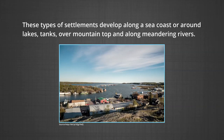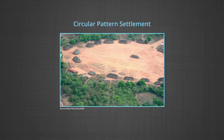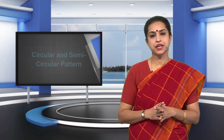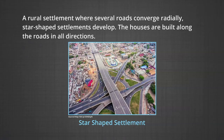Circular and semi-circular pattern: these types of settlements develop along the sea coast or around lakes, tanks, over mountain tops, and along meandering rivers. Sometimes villages are planned so that the central place is used as a shelter to keep domestic animals safe from wild animals, and rural settlements form a circular pattern around it. Star-shaped pattern: a rural settlement where several roads converge radially, causing star-shaped pattern settlements to develop. The houses are built along the roads in all directions, with examples found in the plains of Yangsi-Kyang in China and in Punjab in India.